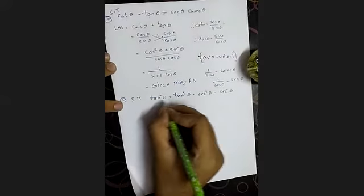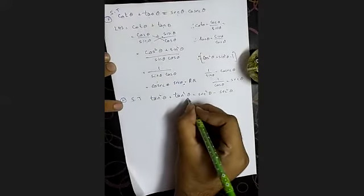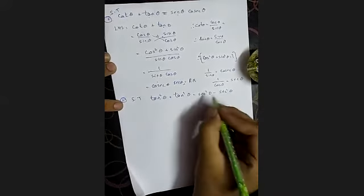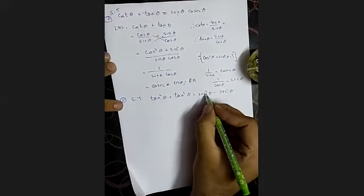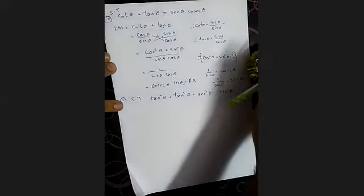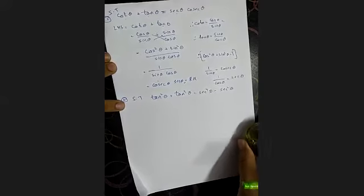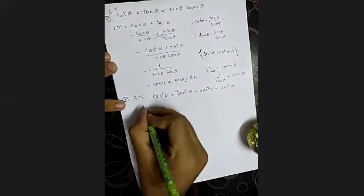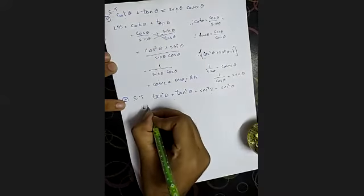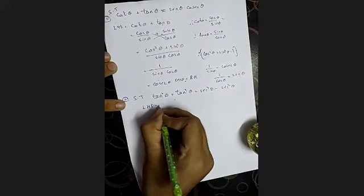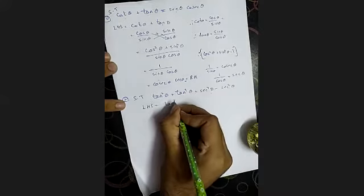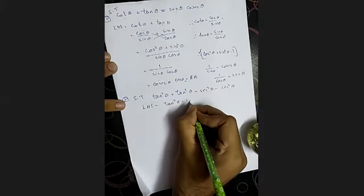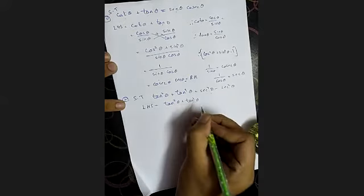Next, show that tan squared theta plus tan to the power 4 theta is equal to secant to the power 4 theta minus secant squared theta. This is given to us in the question. We have to show LHS equals RHS. So first of all, we'll take LHS: tan squared theta plus tan to the power 4 theta.